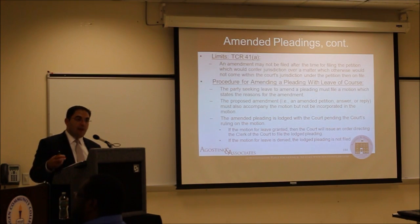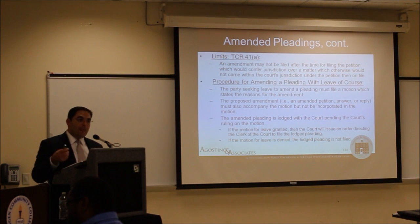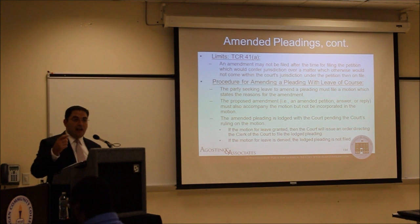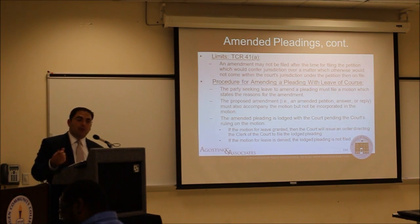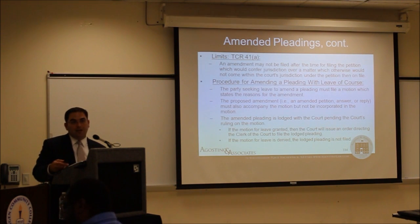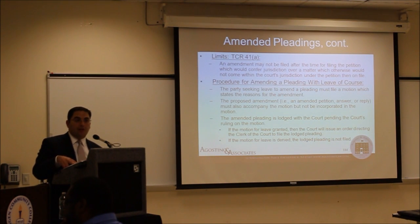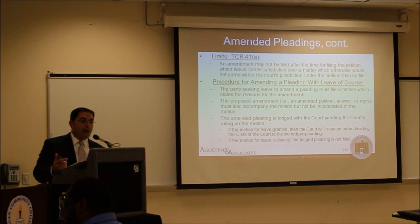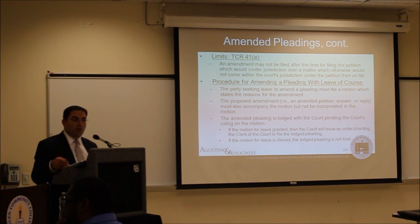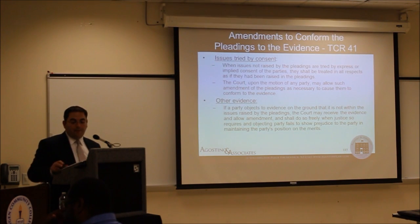Procedurally, the taxpayer files two documents: first, a motion for leave to amend the pleadings, and second, the actual amended pleading, which is lodged — given to the court but not filed until the court actually grants leave. The court does a balancing test: if justice requires granting leave to file the amended pleading, the court grants the motion and directs the clerk to file the document. Documents that are not filed are not part of the record, so make sure your submitted documents are part of the actual record.